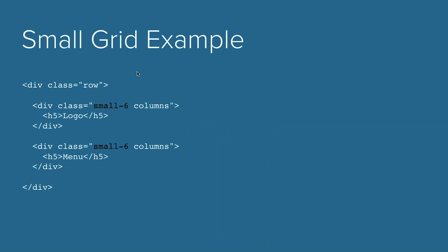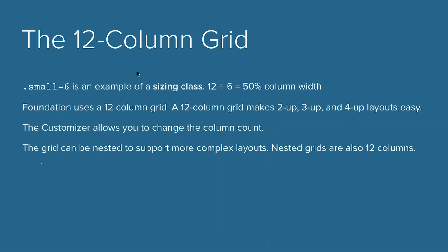As we just saw in that code example: small-6 and small-6 should look 50% width. So small-6 is an example of a sizing class — 12 divided by 6 equals 50% column width. If you put two small-6 columns next to each other, you'll have two columns that are 50% of the screen at the small breakpoint.